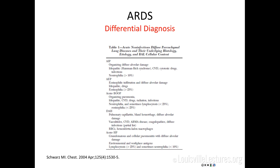Some of these conditions can be identified by bronchoscopy. Alveolar hemorrhage can be picked up by bronchoscopy or BAL. Eosinophilic pneumonia can also be diagnosed by sending the cell differential of the BAL and finding many eosinophils. These are not common conditions, but if you're not sure of the etiology of ARDS, it's good to think about them as possible etiologies.